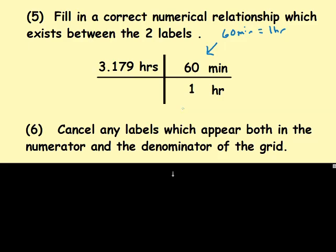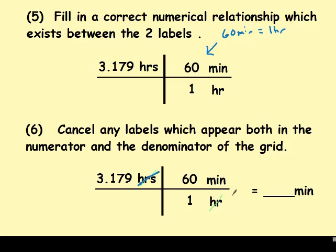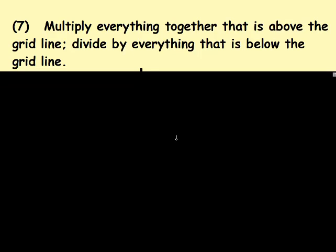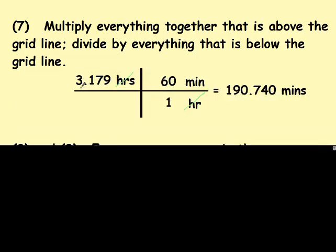The next step people forget to do and it messes them up. Make sure that you're canceling any units that appear in both the numerator and denominator of the grid. So this hour is canceling out with this hour, leaving me with minutes which is what I wanted my answer in. If everything besides what I wanted didn't cancel out then I wouldn't be done. I would need to keep converting. Now I'm going to multiply everything together that is above the grid line and divide by everything that is below the grid line. In this case I have 3.179 times 60 divided by 1. I just don't have to hit divide by 1 since that would give me the same number. So multiplying these two I get that many minutes.